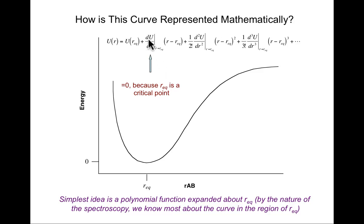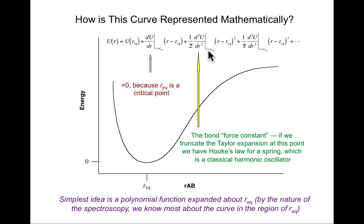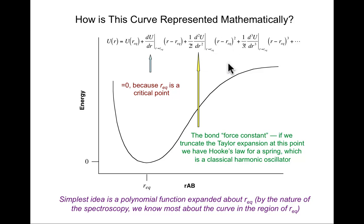The first derivative coefficient is made simple by using the equilibrium position as the reference, because that's a critical point, so the first derivative goes to zero. The second derivative term is actually the force constant if I truncate at that point — Hooke's Law for a spring — which says energy equals a reference energy plus one-half k, the force constant, times the displacement squared.